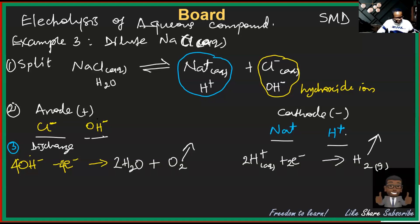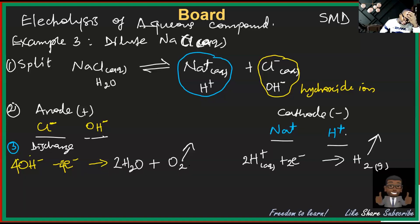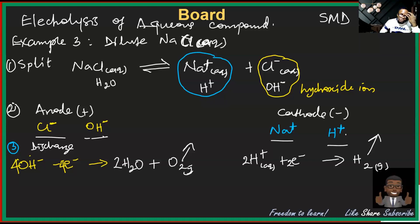So remember we are using inert electrodes. There are two possibilities at the anode: chloride is discharged if concentrated, or hydroxide is discharged if dilute. In the dilute case, chlorine is not discharged — it is the hydroxide that gives oxygen gas.